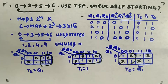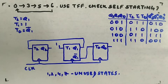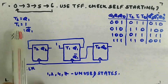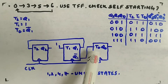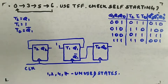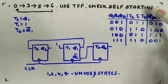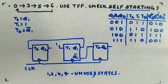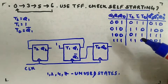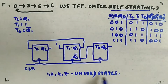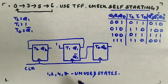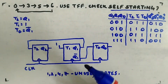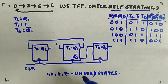The circuit is now designed: T2 = Q1, T1 = 1, T0 = Q1'. This circuit counts the sequence 0, 3, 5, 6, 0, 3, 5, 6. Now let's check the self-starting part. For unused states, we take each as an initial state and check whether the next state eventually leads back to the main sequence.